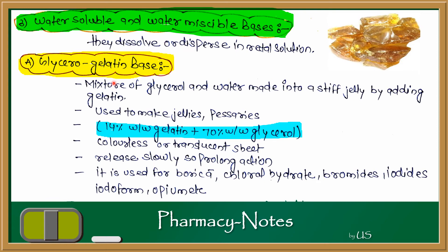Glycero-gelatin base is a mixture of glycerol and water made into a stiff jelly by adding gelatin. The combination is 14% weight by weight gelatin plus 17% weight by weight glycerol. They form colorless and translucent sheets. They release slowly, providing prolonged action because it is gelatin. We can also use glycero-gelatin base for various applications.